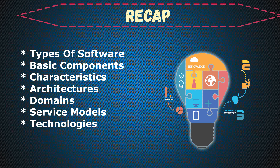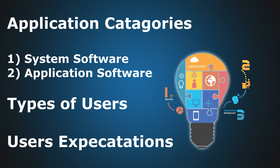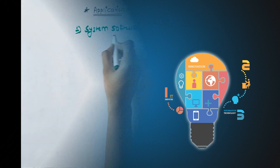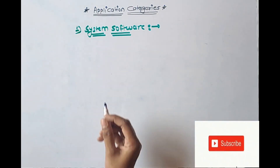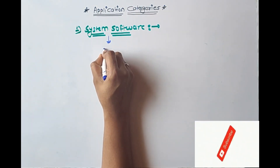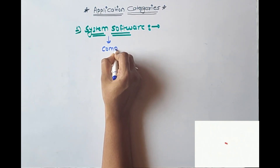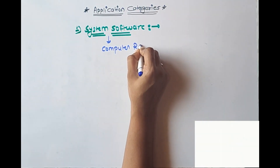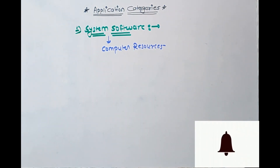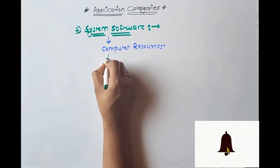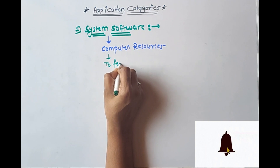First of all, we are going to see application categories, in which there are two types: system software and application software. System software means the software which manages the computer resources and helps the computer to function.